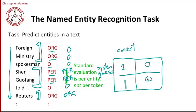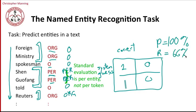The precision of our system here is 100% — everything it says is right — and its recall is two thirds. So that looks okay. But when we get into the details, it gets a little bit trickier than that.